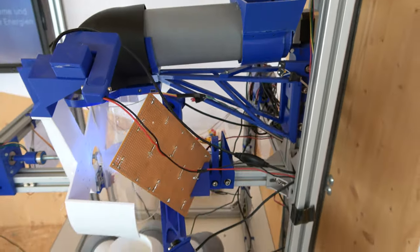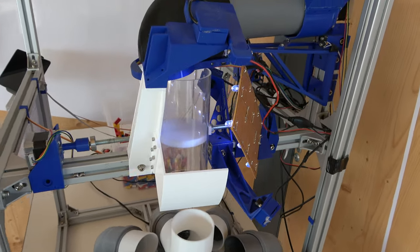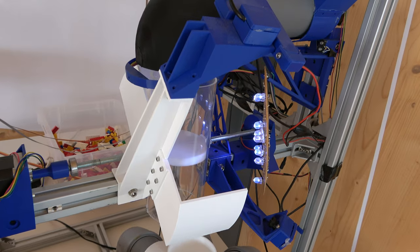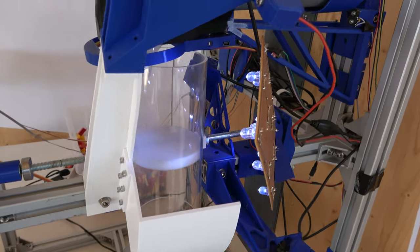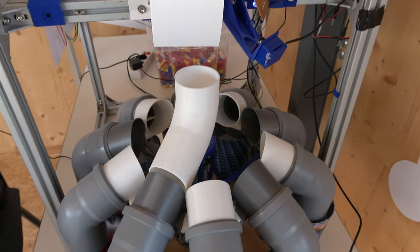The individual stones fall into a recognition box, a simple plexiglass tube. Here they are recorded by three cameras. Due to the different recording angles, it is possible to recognize not only the color, but also the extensions of the stones in all spatial directions.